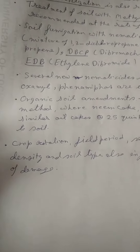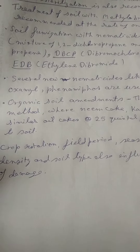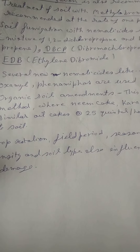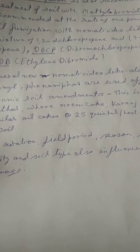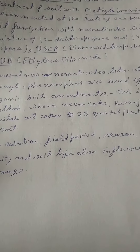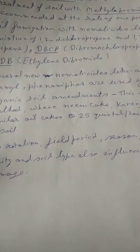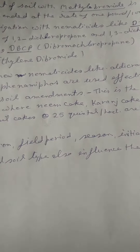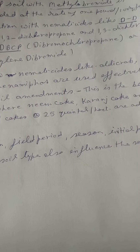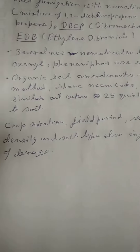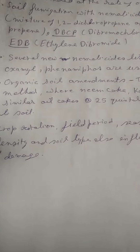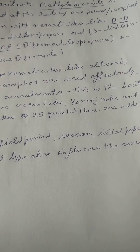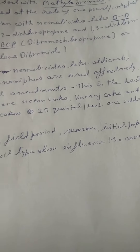There are organic soil amendments, meaning organic substances that can be used to control nematodes, which include neem cake, karanja cake, and some other oil cakes, applied at 25 quintals per hectare according to soil conditions.